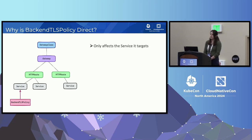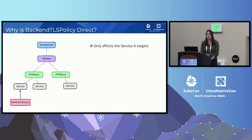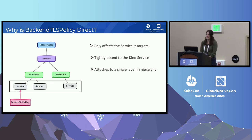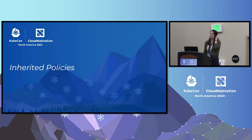Why is this 'direct'? A key difference between policies and other extension mechanisms is which resource does the referencing. With extensions like route filters, backend refs, or parameters ref, the Gateway API resource references an external CRD. But with policies, the policy — the CRD — does the referencing; it targets a resource in the Gateway API resource model. It's direct because it only affects the service it targets, it's tightly bound to the kind Service, and it attaches to a single layer in the hierarchy.